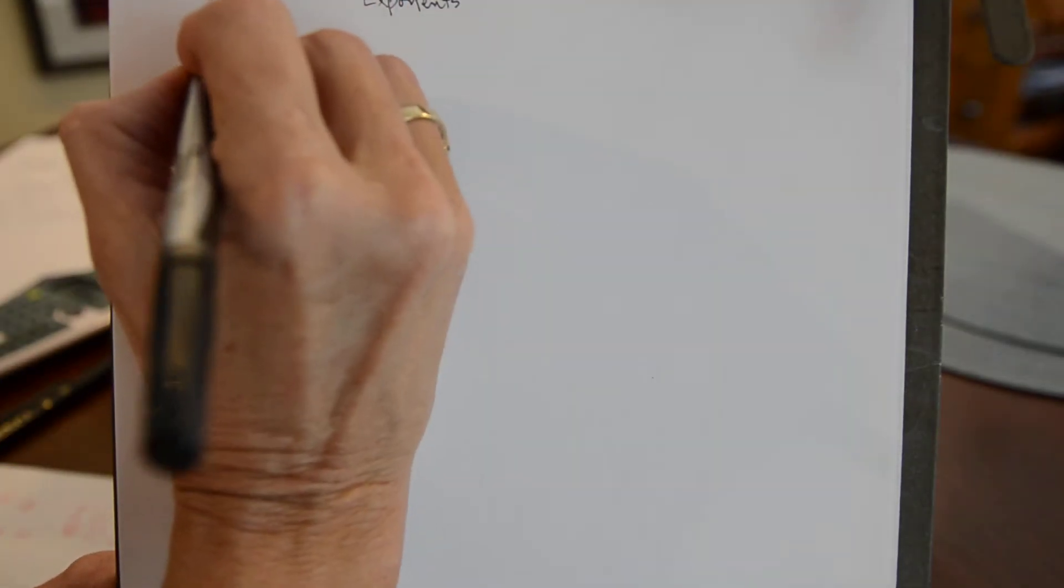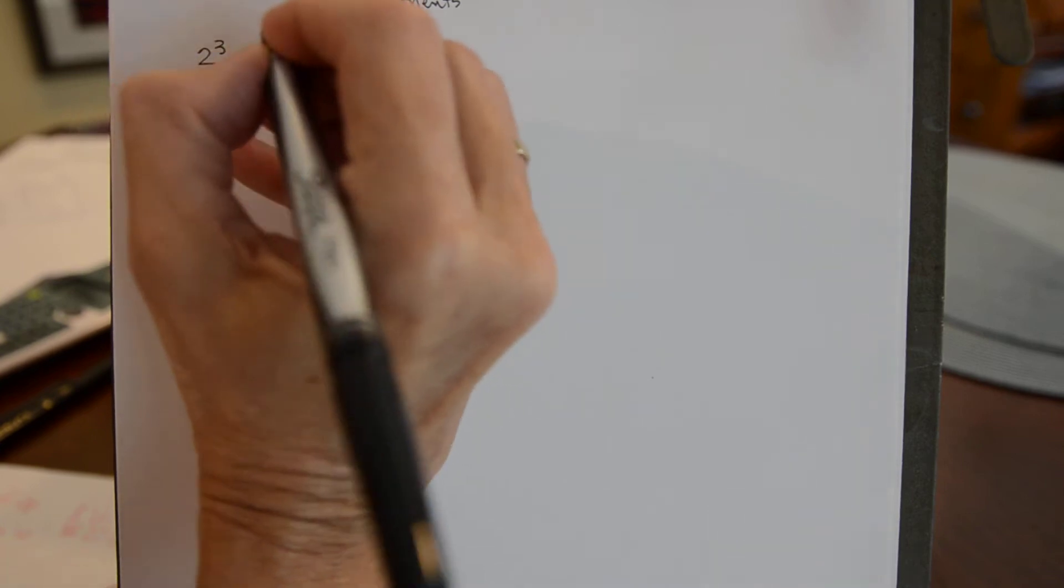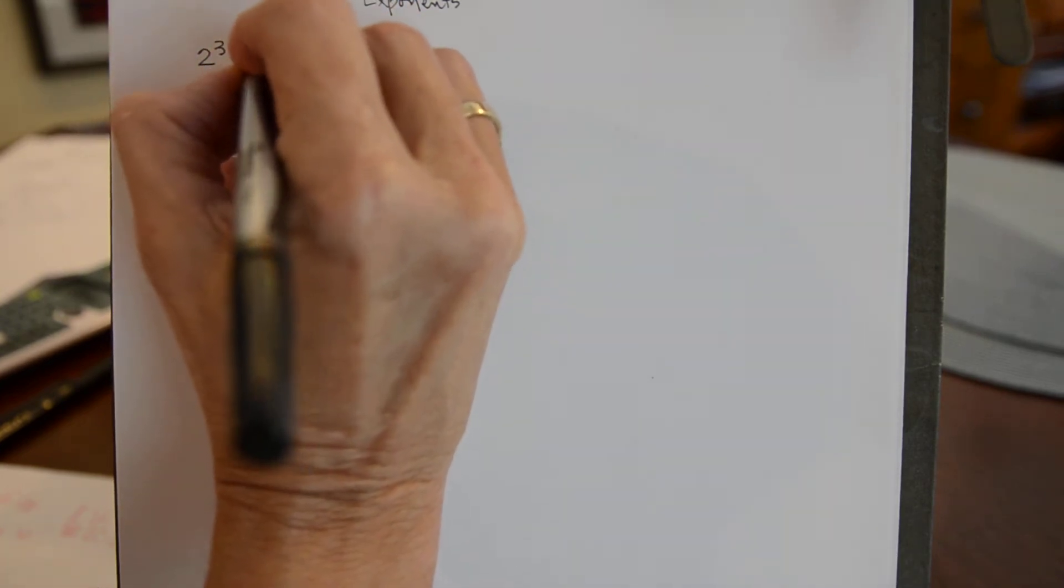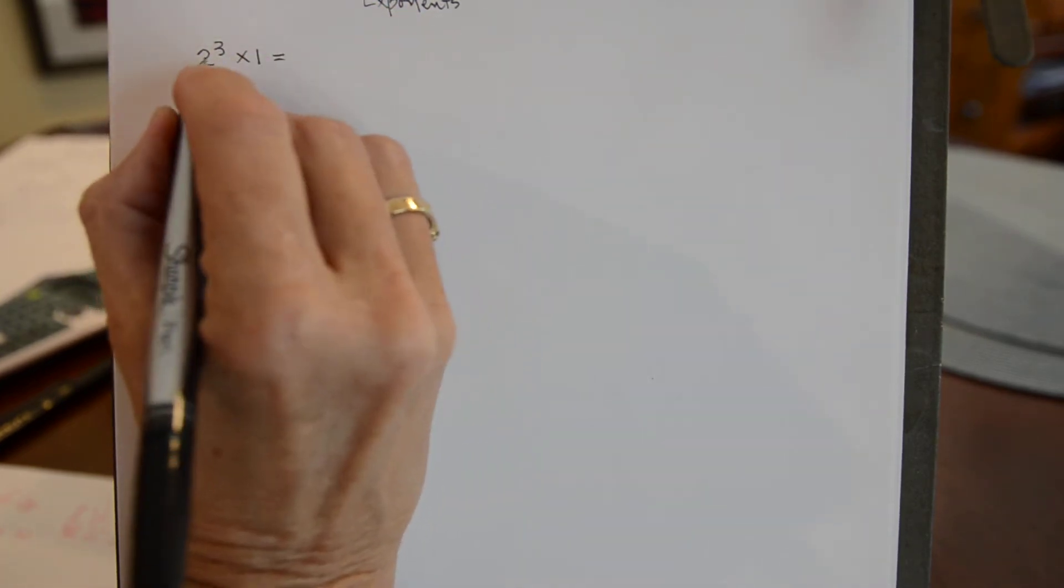Now I want to continue with order of operations and do a few problems with exponents. So we have one that is 2 exponent 3 times 1. We need to do the exponents first.